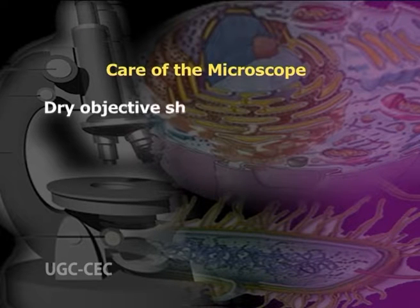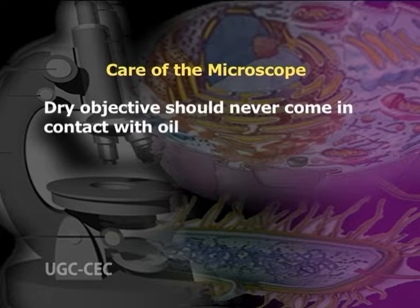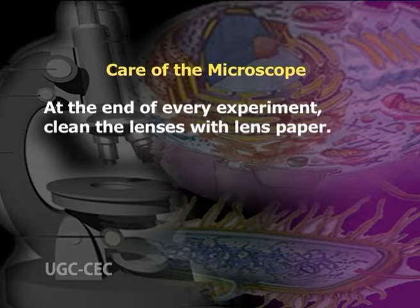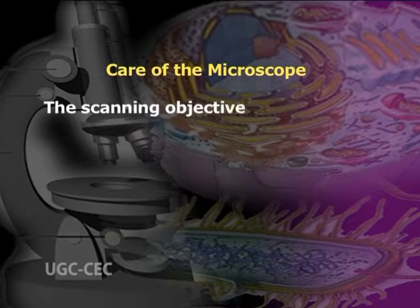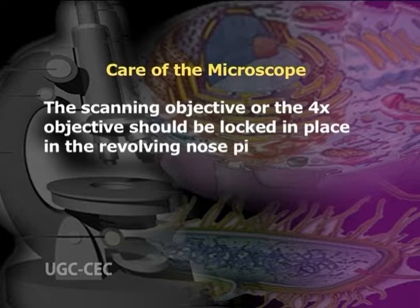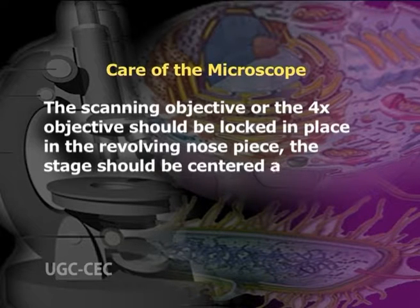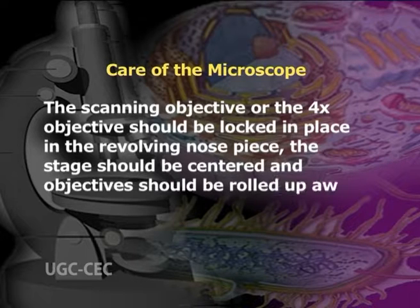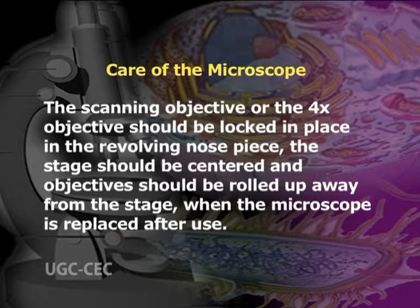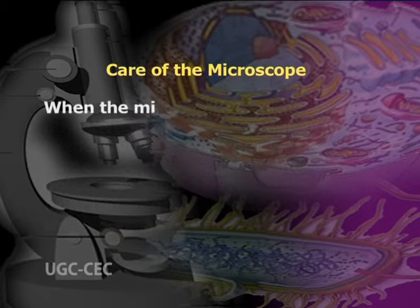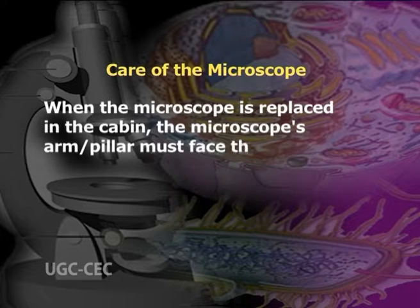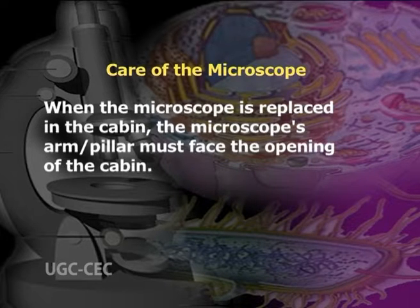Dry objectives should never come in contact with oil. At the end of every experiment, clean the lenses with lens paper. The scanning objective, or the 4x objective, should be locked in place in the revolving nosepiece. The stage should be centered and the objective should be rolled up away from the stage when the microscope is replaced after use. When the microscope is replaced in the cabinet, the microscope's arm or pillar must face the opening of the cabinet.